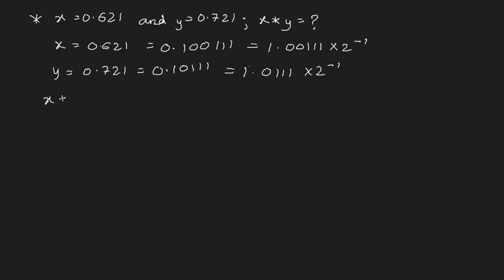Now let's multiply X with Y: 1.00111 × 1.0111 × 2^(-2). Why minus 2? Because we're multiplying, so 2^(-1) × 2^(-1) = 2^(-2). To get the answer for this we can do binary multiplication, and it's a really long process.